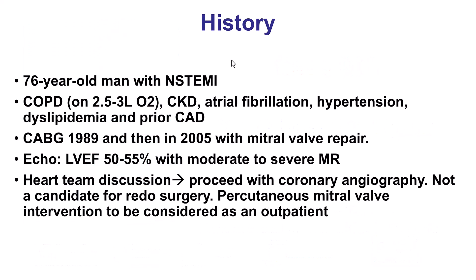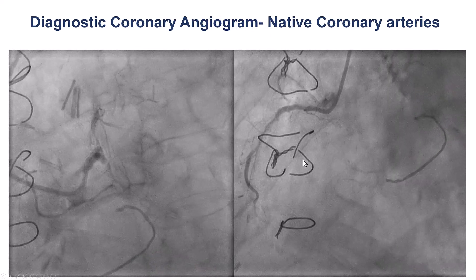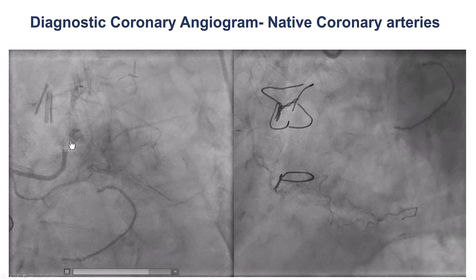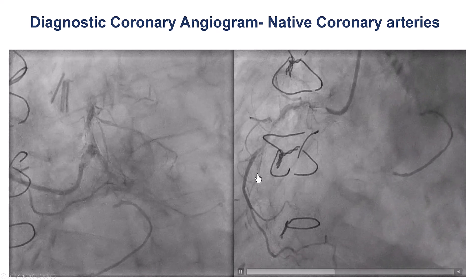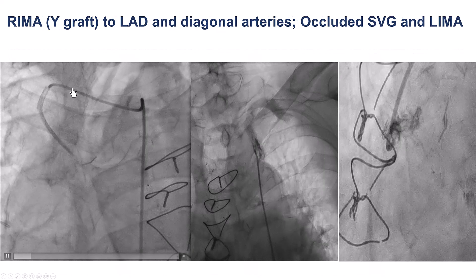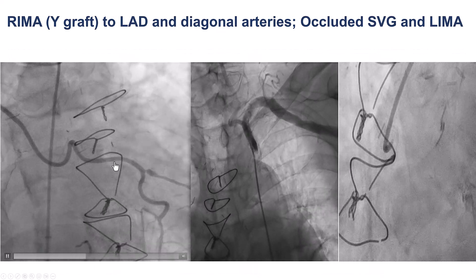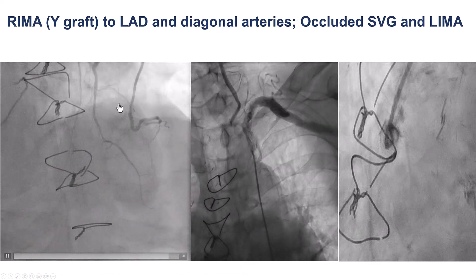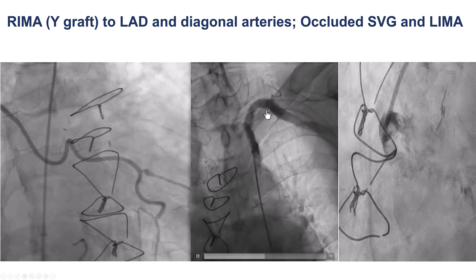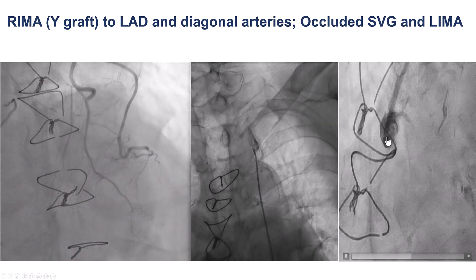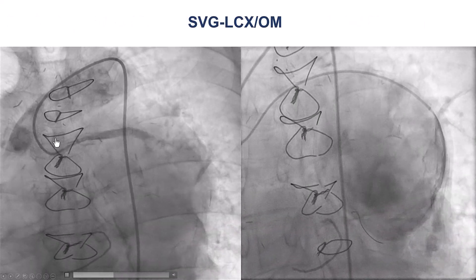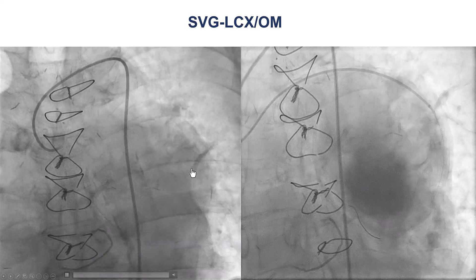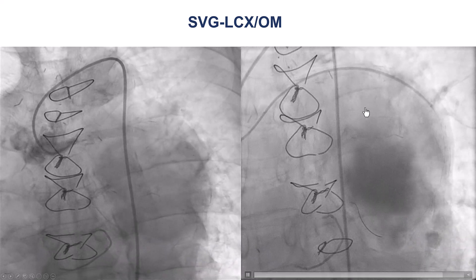The patient was an elderly gentleman who presented with non-ST elevation myocardial infarction. He had cardiac surgery twice and had normal ejection fraction with mild to moderate mitral regurgitation. Coronary angiography showed CTOs of both the left as well as the right native coronary arteries. He did have a patent RIMA supplying the LAD with a Y graft supplying a diagonal branch, but the RIMA was occluded, there was an occluded SVG, and there was another SVG going to an obtuse marginal branch that had a very large aneurysm.